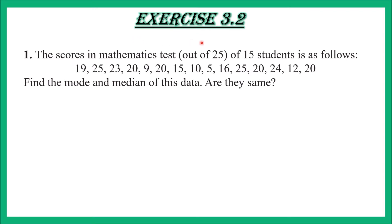Exercise 3.2, Question number 1: The scores in a mathematics test out of 25, of 15 students, are as follows — 19, 25, 23, 29, 20, 15, 10, 5, 16, 25, 20, 24, 12, and 20. Find the mode and median of this data. Are they the same?